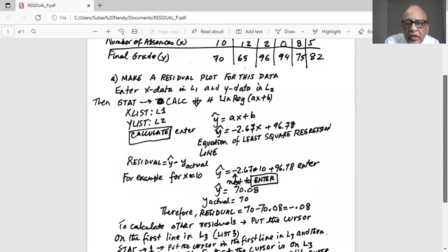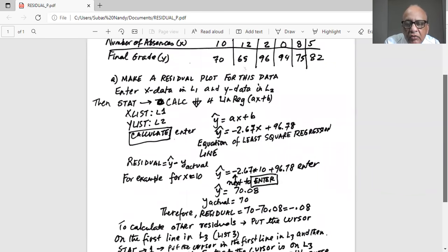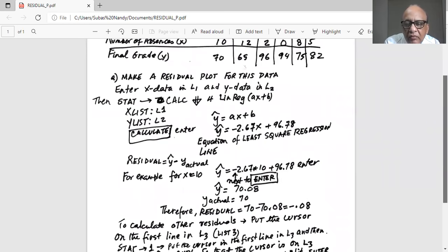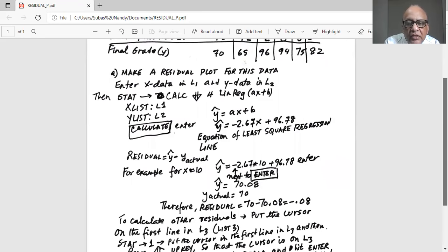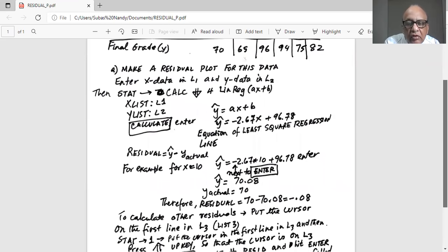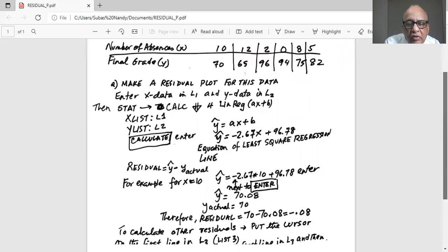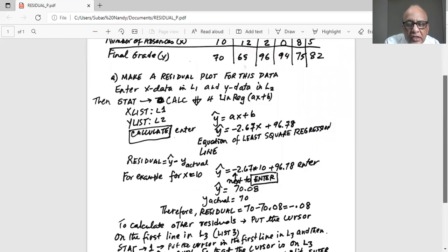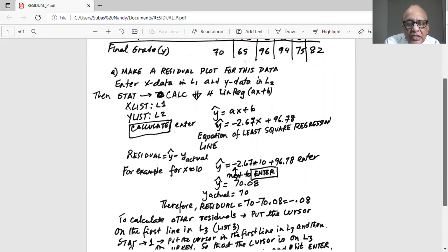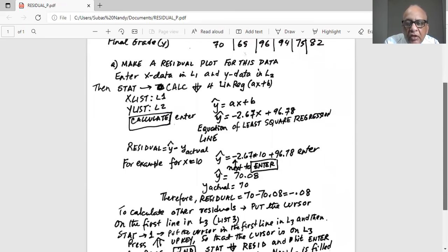So, for example, for X equal to 10, we plug in the X value of 10 in the equation. So in our calculator, we do minus, you have to be careful, it is the minus sign on the left of the enter button, 2.67 times 10 plus 96.78 enter. And we get Y hat equal to 70.08. Now for X equal to 10, the actual value of Y as given in the data is 70. So the residual is 70 minus 70.08 or minus 0.08.